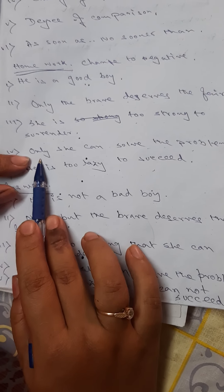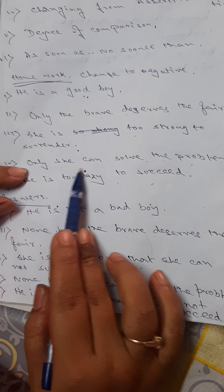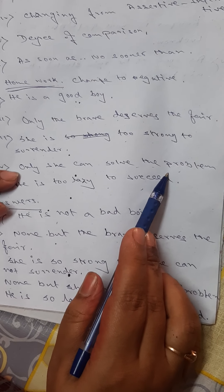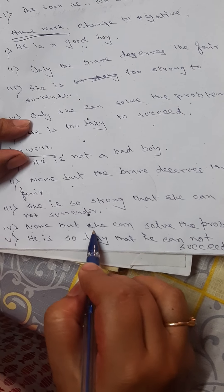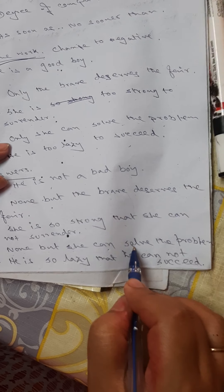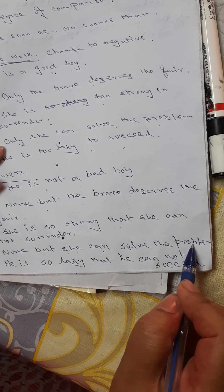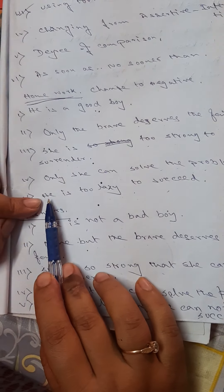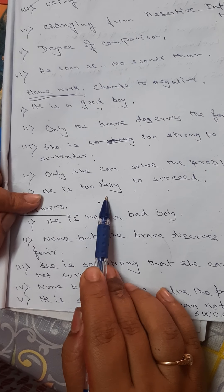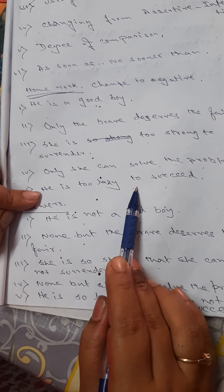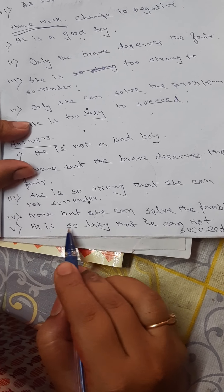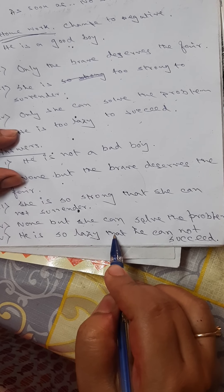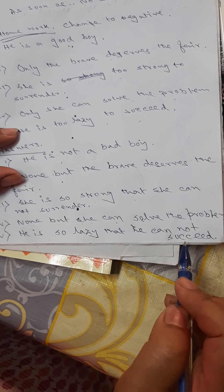Fourth sentence was: 'Only she can solve the problem.' The answer is: 'None but she can solve the problem.' Fifth sentence was: 'He is too lazy to succeed.' The answer is: 'He is so lazy that he cannot succeed.' Now I am giving you another rule for changing from affirmative to negative.